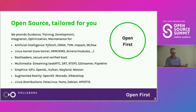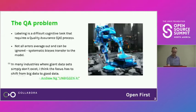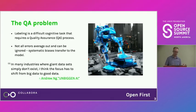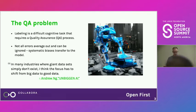We also have an AI team — it's small but good. And we encountered this problem that labeling is a very difficult task, and it for sure requires a quality assurance process.